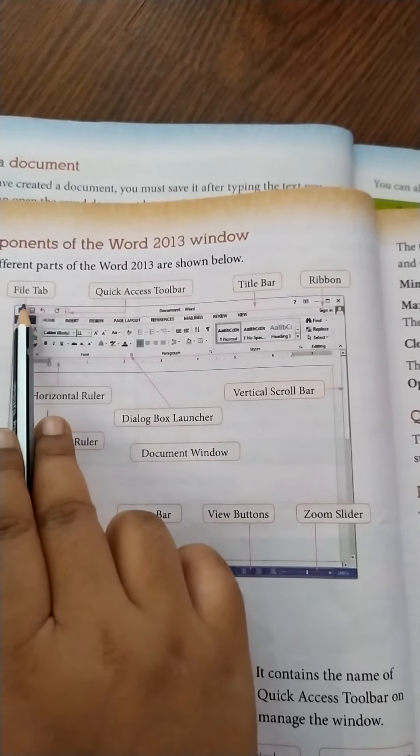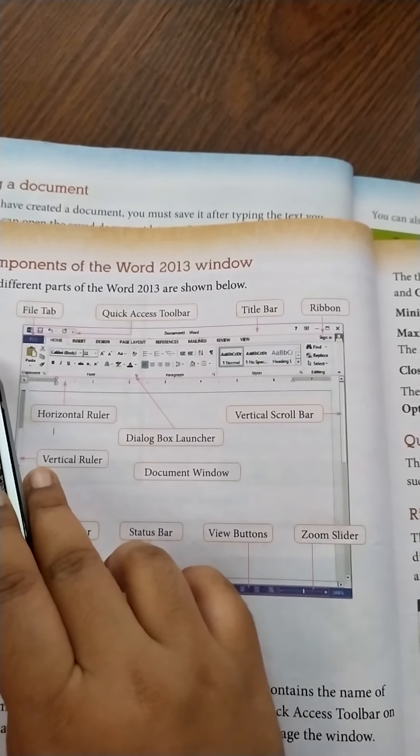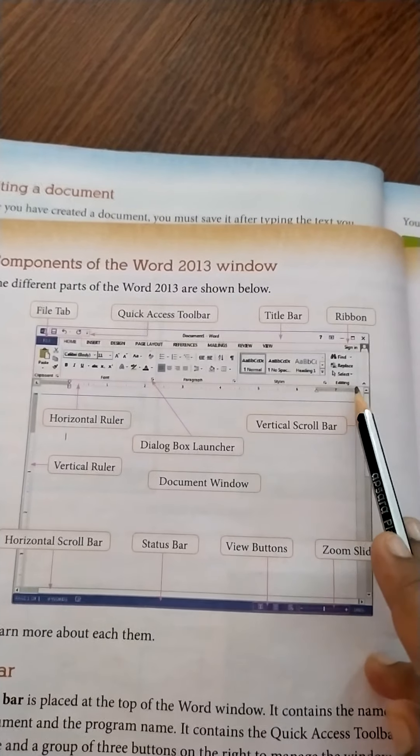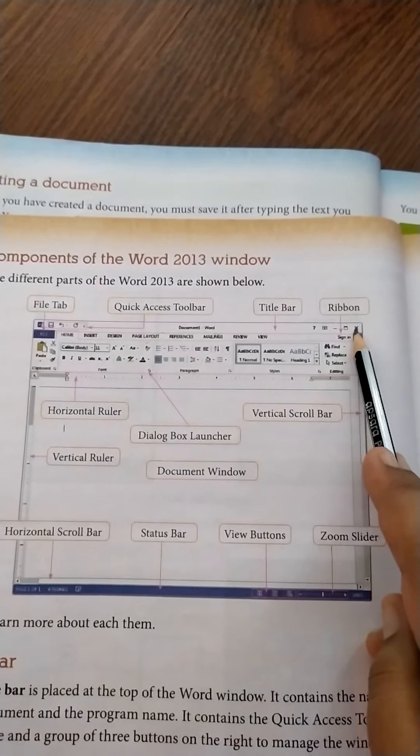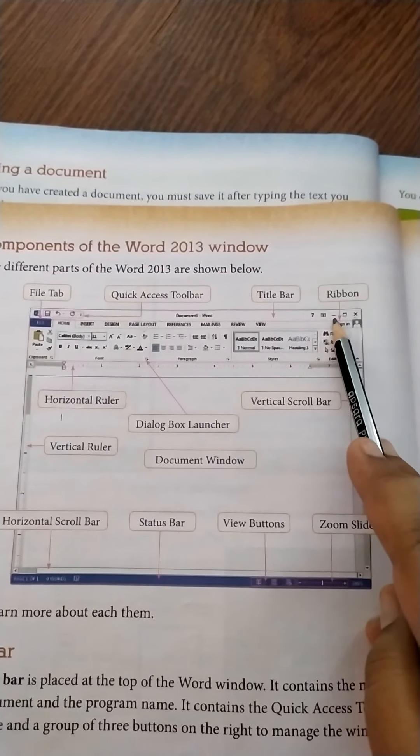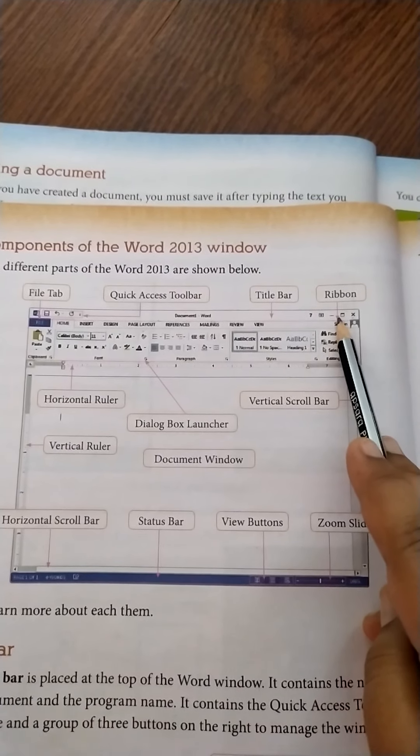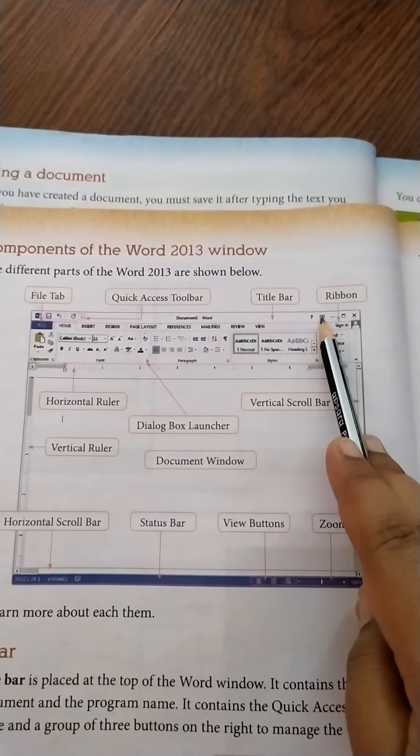On the left hand side we have the quick access toolbar. And on the right hand side we have some more buttons like the close button, the minimize button, the maximize button, and the ribbon display option button.